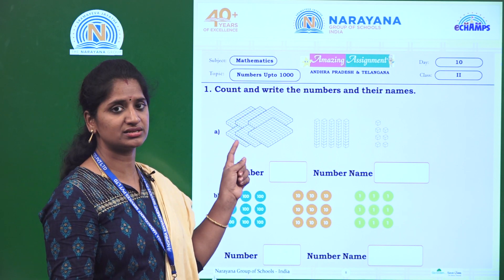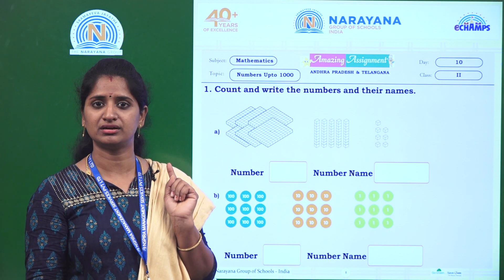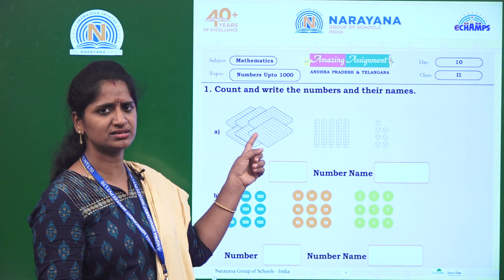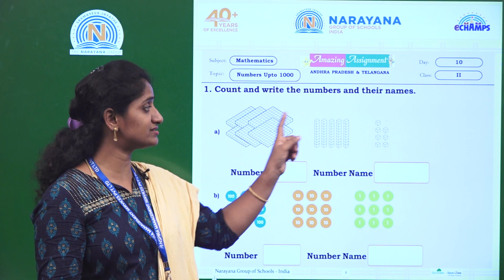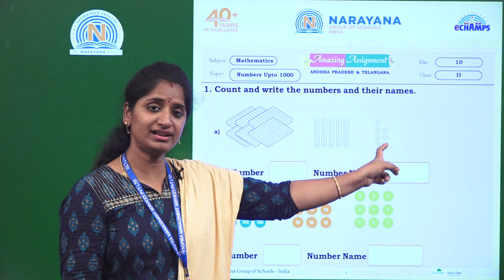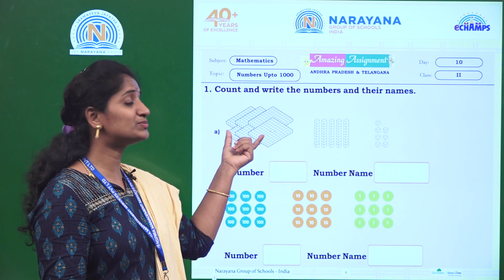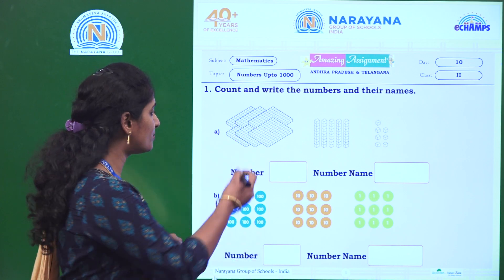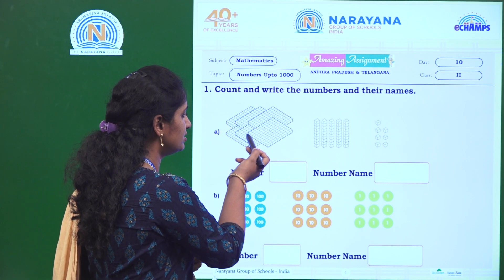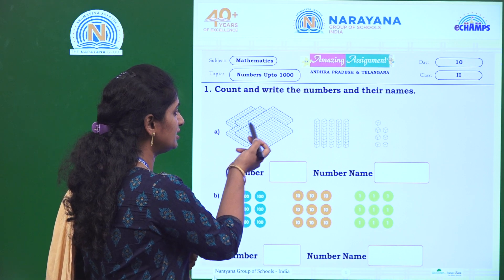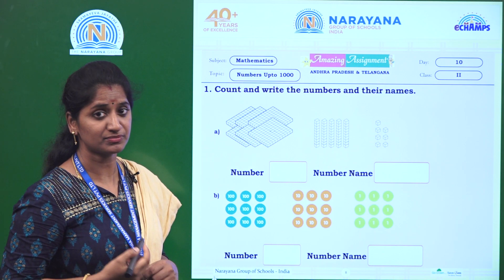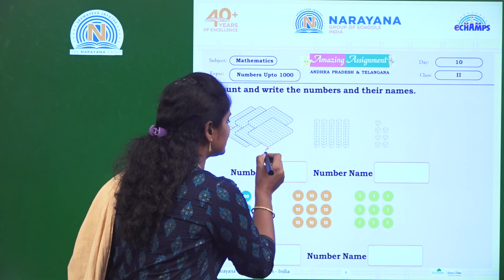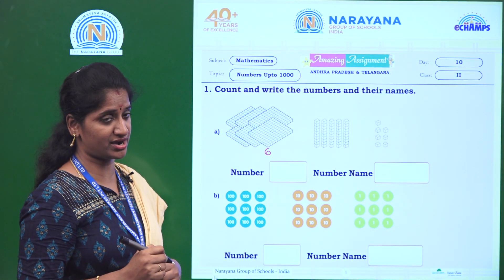These blocks are related to which place? That is the hundreds place. Here is the hundreds place, this is the tens place, and this is the ones place. Each brick value is 100. So, how many hundreds are here? 1, 2, 3, 4, 5, 6. It is 6 bricks, that means 600.